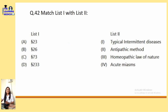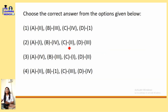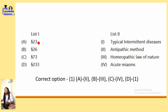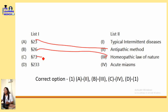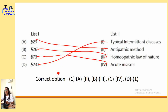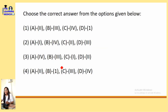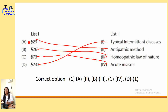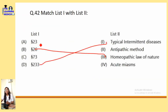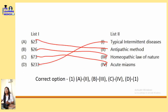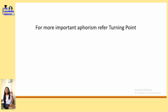For the match list question on aphorism numbers: aphorism number 23 is antipathic method, aphorism number 26 is homeopathic law of cure, aphorism number 73 is acute miasm, and aphorism number 233 is typical intermittent diseases. The correct option is option number 1. For more aphorisms, refer to Turning Point — I have also made a short on this.